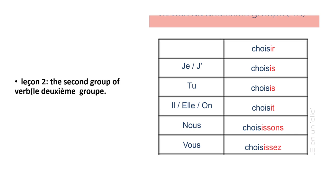Lesson 2. Leçon 2. The second group of verbs. Le deuxième groupe. In this lesson, we are going to learn how to use the second French group verbs to describe an event in French. The group verbs which end in -er or -ir in French.